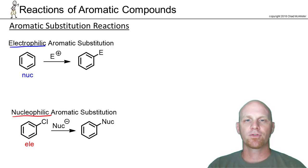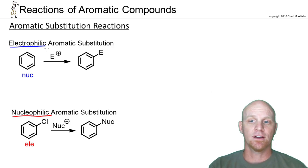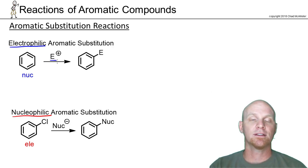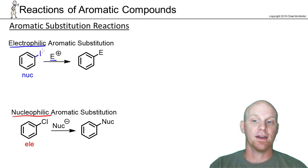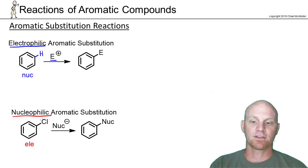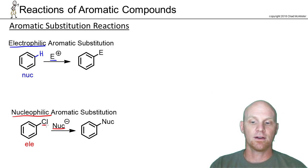The name comes from what is actually doing the substituting. In electrophilic aromatic substitution, we're reacting benzene with an electrophile — it has to be a strong electrophile — and it will be replacing a hydrogen. In nucleophilic aromatic substitution, we'll be reacting benzene with a nucleophile, and it will be replacing a halogen, like chlorine.